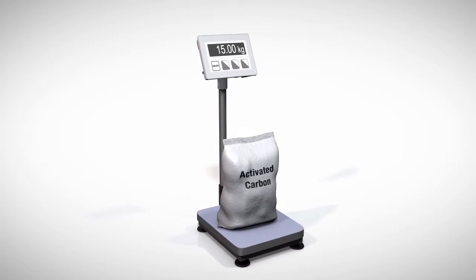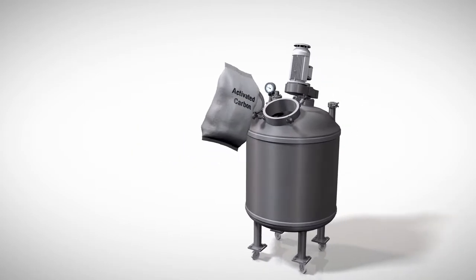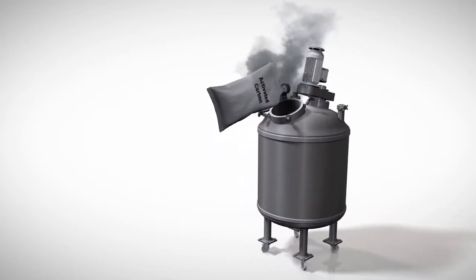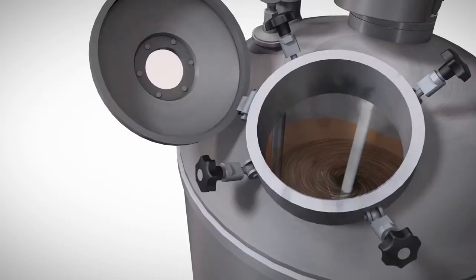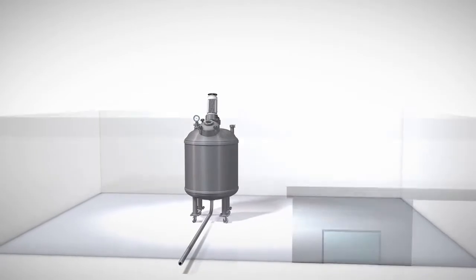When using powdered activated carbon for decolorization, the correct amount of powder has to be added to the solvent in an agitation tank. Due to the formation of dust, this is done in a separate room or with special equipment like a glove box to avoid dust explosions.